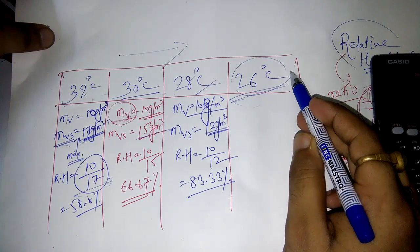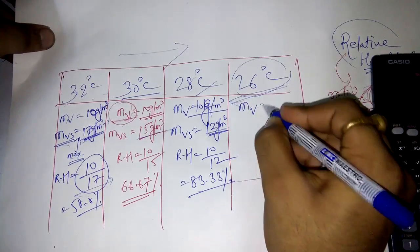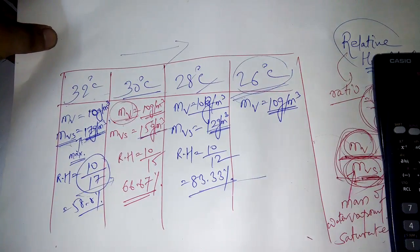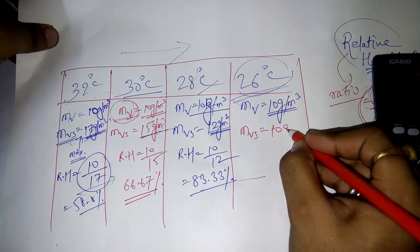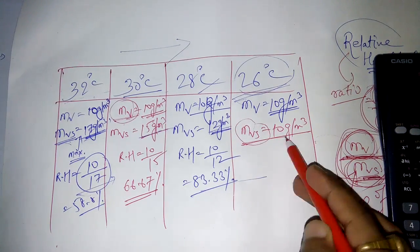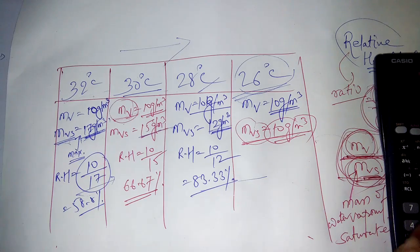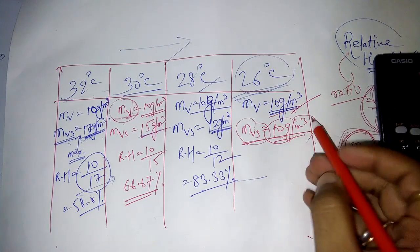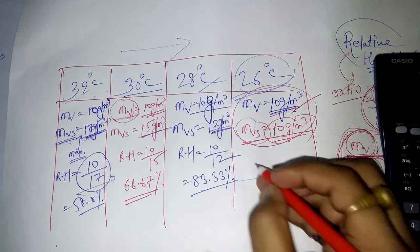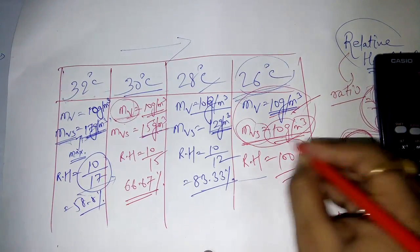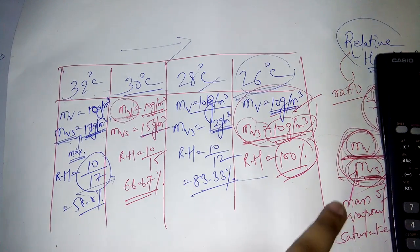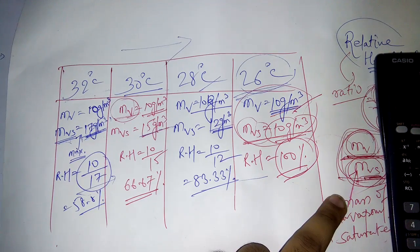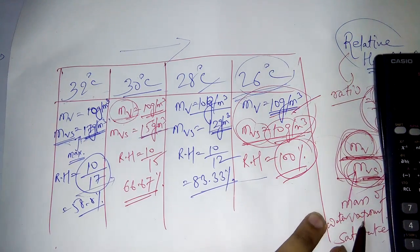At 26°C, the mass of vapor remains 10 grams per cubic meter, but now MVS has also dropped to 10 grams per cubic meter. This means air is at the saturated condition and relative humidity is 100%. Can relative humidity increase beyond 100%? No, it is never possible.